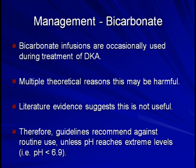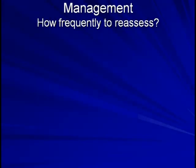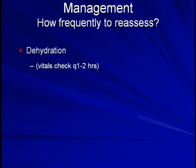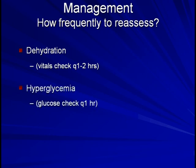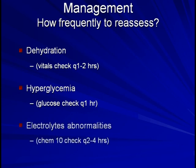How frequently should one reassess these patients with hyperglycemic crises? The short answer is very frequently. To monitor dehydration, their vitals and urine output should be checked at least every 1 to 2 hours. Their blood sugar should be checked every 1 hour until it is below 250 and stable for several sequential readings. Their electrolytes should be checked every 2 to 4 hours until the crisis is resolved.